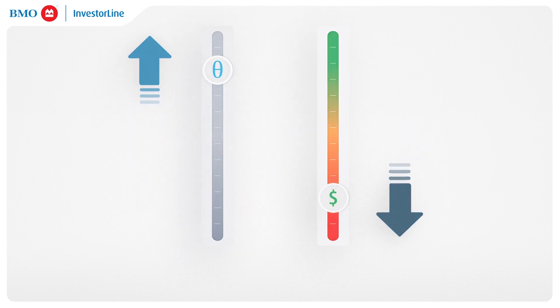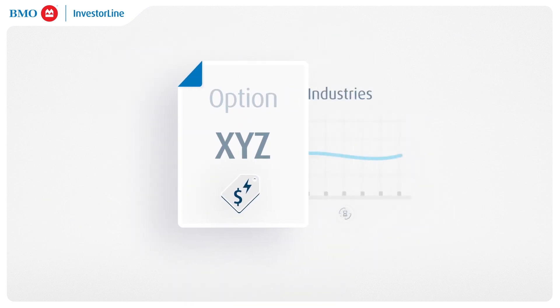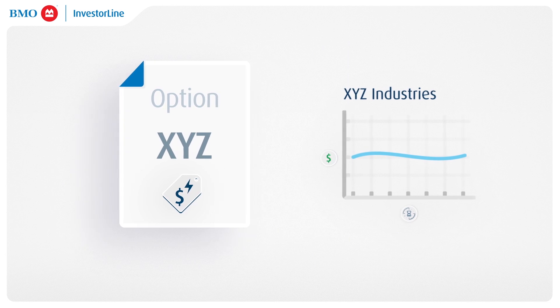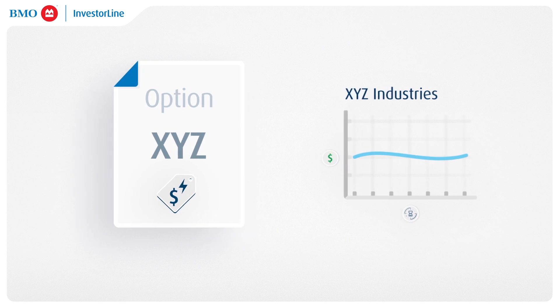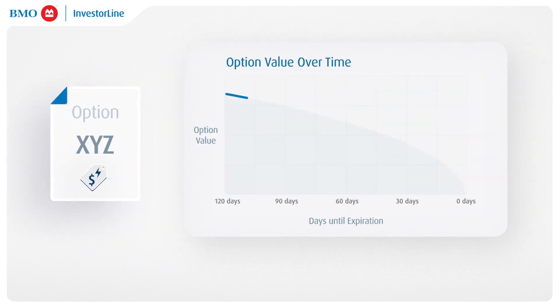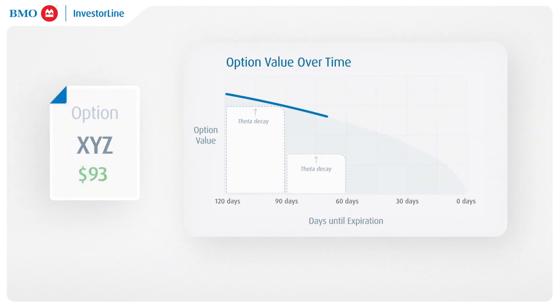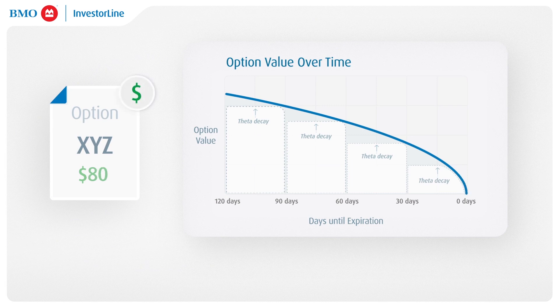Imagine you hold an option contract. If the price of the underlying asset remains stagnant or doesn't move significantly in your favor, the Theta decay accelerates day by day, and your option loses value. This is crucial to understand, as it can impact your overall profitability.